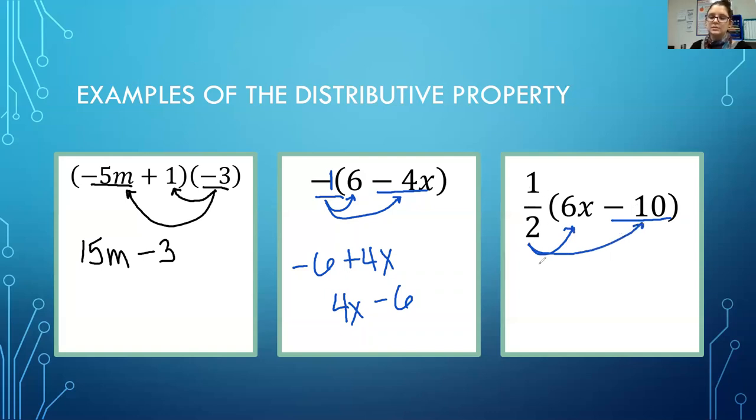So 1 half times 6x: What is 1 half of 6? That's 3. Bring down my x. 1 half times negative 10: Well what's half of negative 10? That would be a negative 5. And this is my final answer.